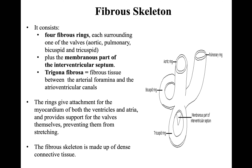Now we'll discuss the fibrous skeleton of the heart. For muscle to contract, it requires an origin and insertion, so the heart is not 100 percent muscle — it has a fibrous skeleton. This fibrous skeleton consists of three parts. First, we have the fibrous rings — one around the aorta, one around the pulmonary artery, and ones around the right and left atrioventricular valves.